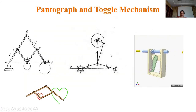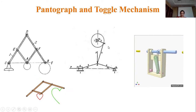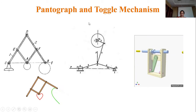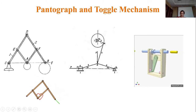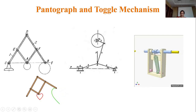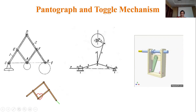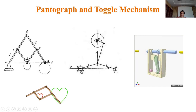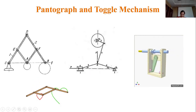Next I will discuss the toggle mechanism. This toggle mechanism is a slider-crank mechanism, but it has six links: the fixed link (1), crank (2), links 3, 4, 5, and the slider as the sixth link.